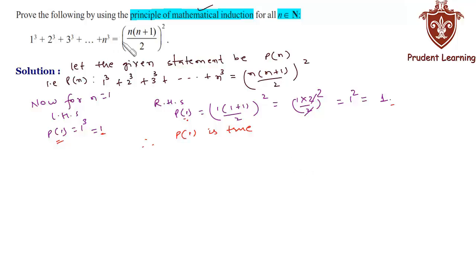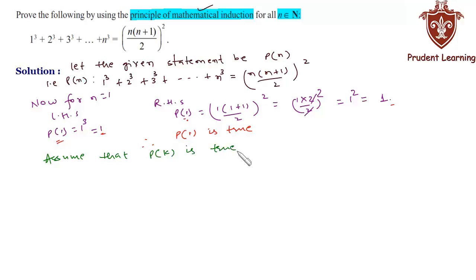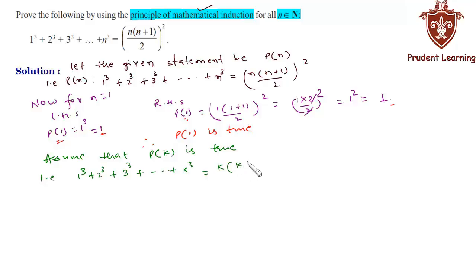In the second step, assume that P(k) is true for some positive integer k. That is, we have 1³ + 2³ + 3³ + ... + k³ = [k(k+1)/2]². Let us call this equation 1.